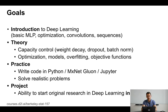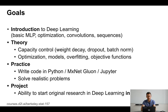That means talking about capacity control, weight decay, dropout, batch normalization, but also about optimization, different types of models, overfitting, objective functions, and so on. Since this is a practical deep learning class, I want to make sure that everybody gets a good idea of how to actually apply deep learning in practice. You will have to write code in Python on Jupyter Notebooks, and the deep learning framework of our choice is MXNet-Gluon.